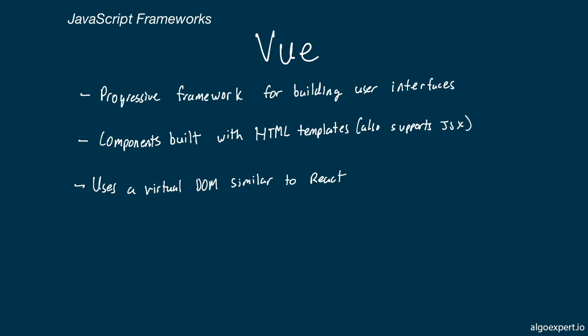Vue is a progressive framework for building user interfaces. It also uses components, and can use either HTML templates — which is the main approach — or JSX. It also uses a virtual DOM similar to React. One great aspect of Vue is that it is easy to add to a project incrementally: you can use it like a library by adding just small features, or adopt it as an entire framework similar to Angular. Because of this flexibility and the fact that Vue is usually considered one of the easiest frameworks to learn, it has become extremely popular in recent years.